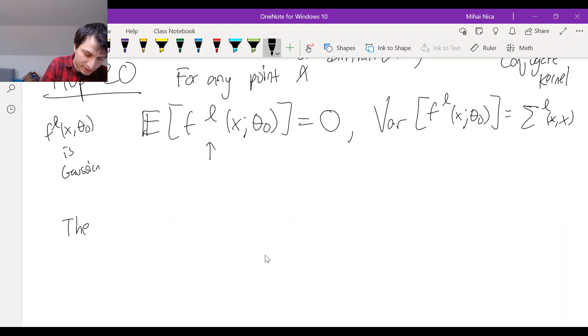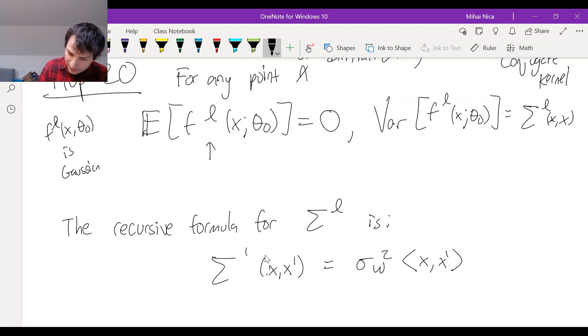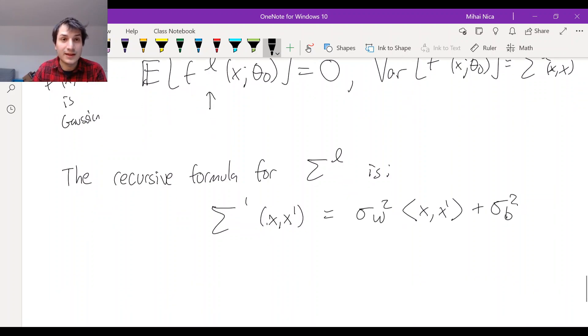So the recursive formula for sigma L is sigma 1 of XX prime is this. It's a simple inner product. That's the first layer. And then to get the Lth layer in terms of the L minus first layer, you use this formula.